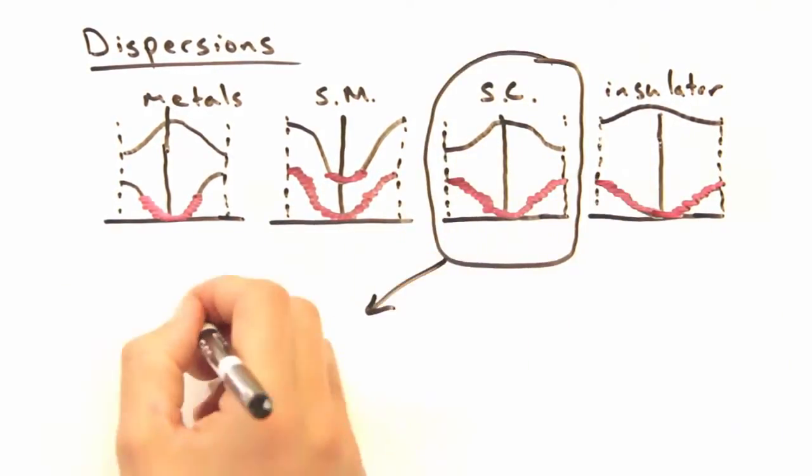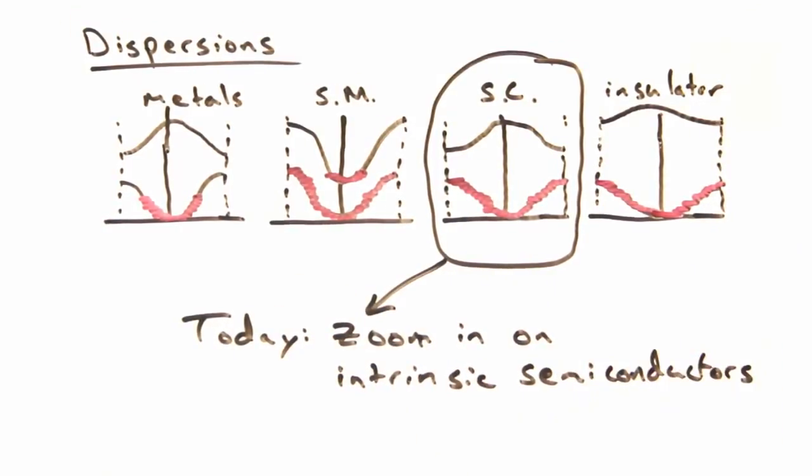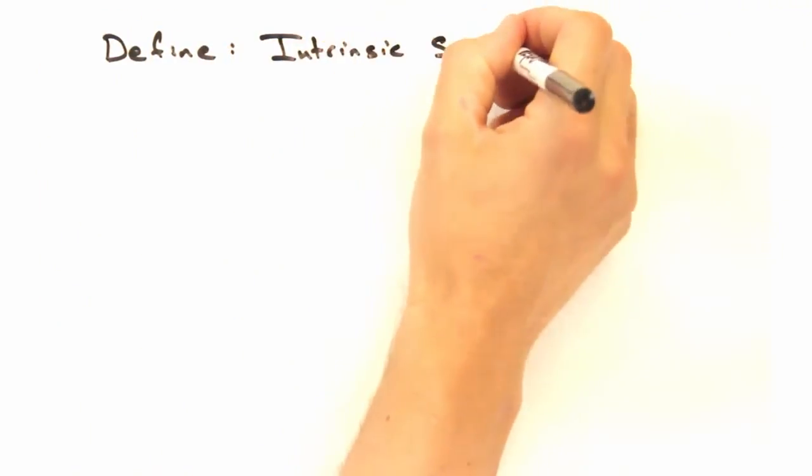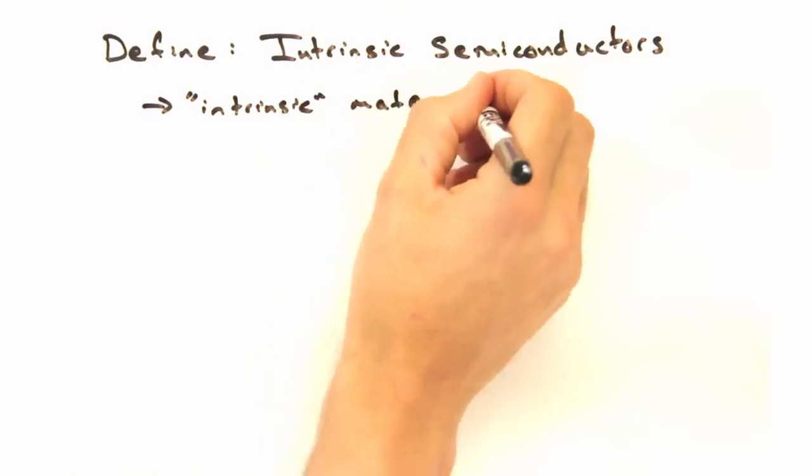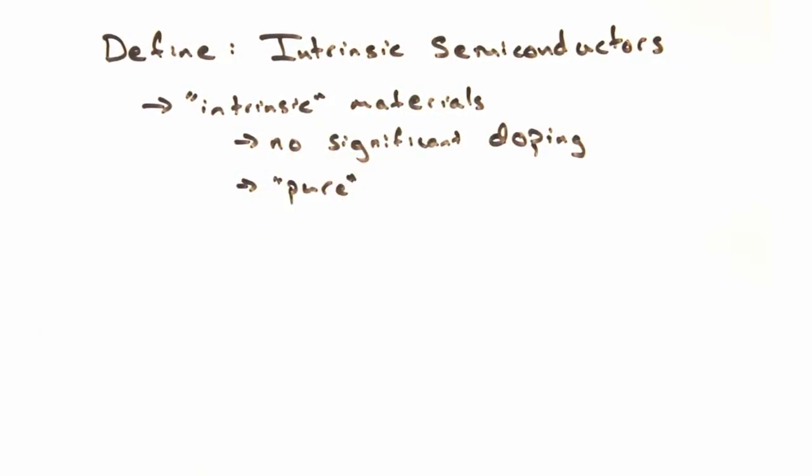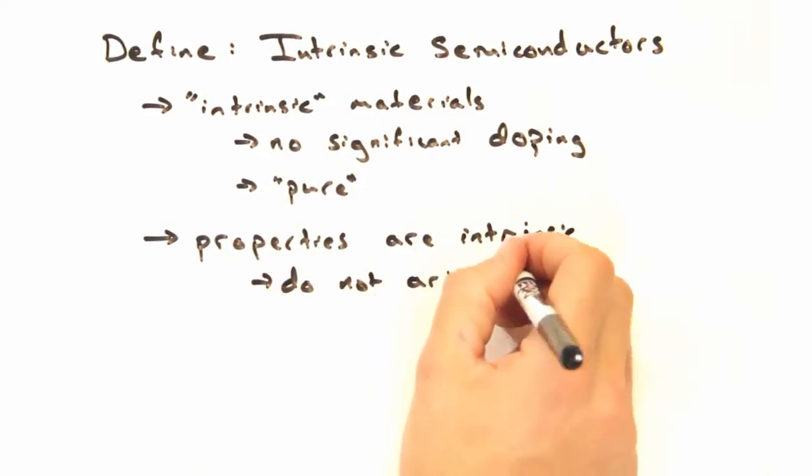This week we're going to be zooming in on intrinsic semiconductors. Wait, what do you mean by intrinsic? Yeah, so an intrinsic material is a pure material, which is to say that it has no significant number of dopants. In other words, it has properties that are intrinsic to the pure material instead of arising from some sort of impurity.